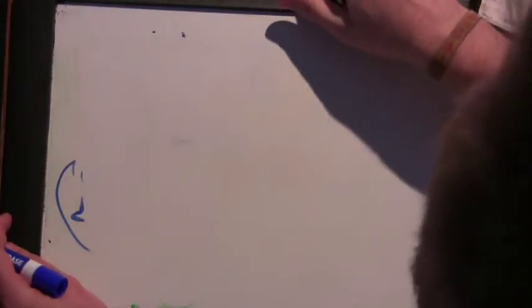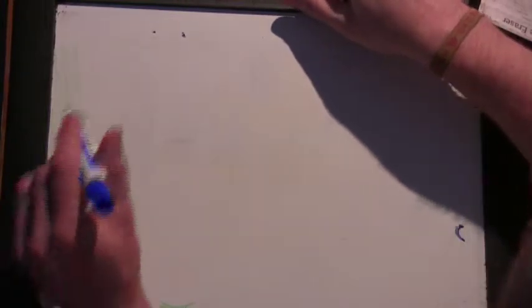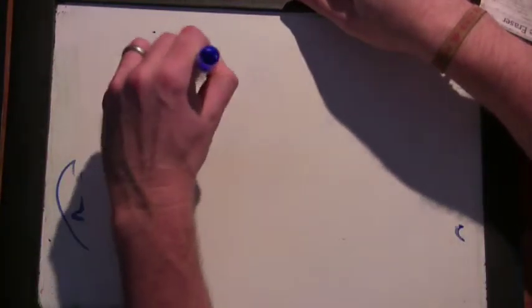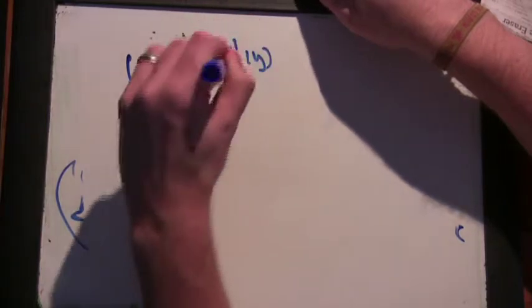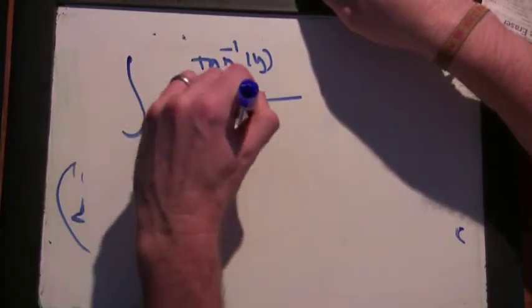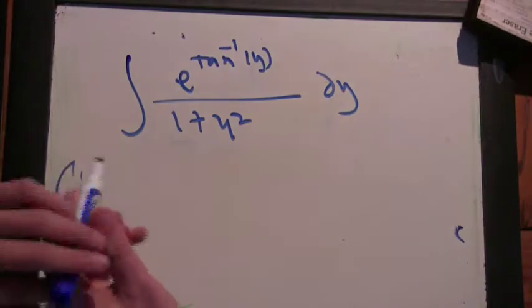Okay, the next problem is e to the arctan of y over 1 plus y squared. Alright, so this one isn't too bad.